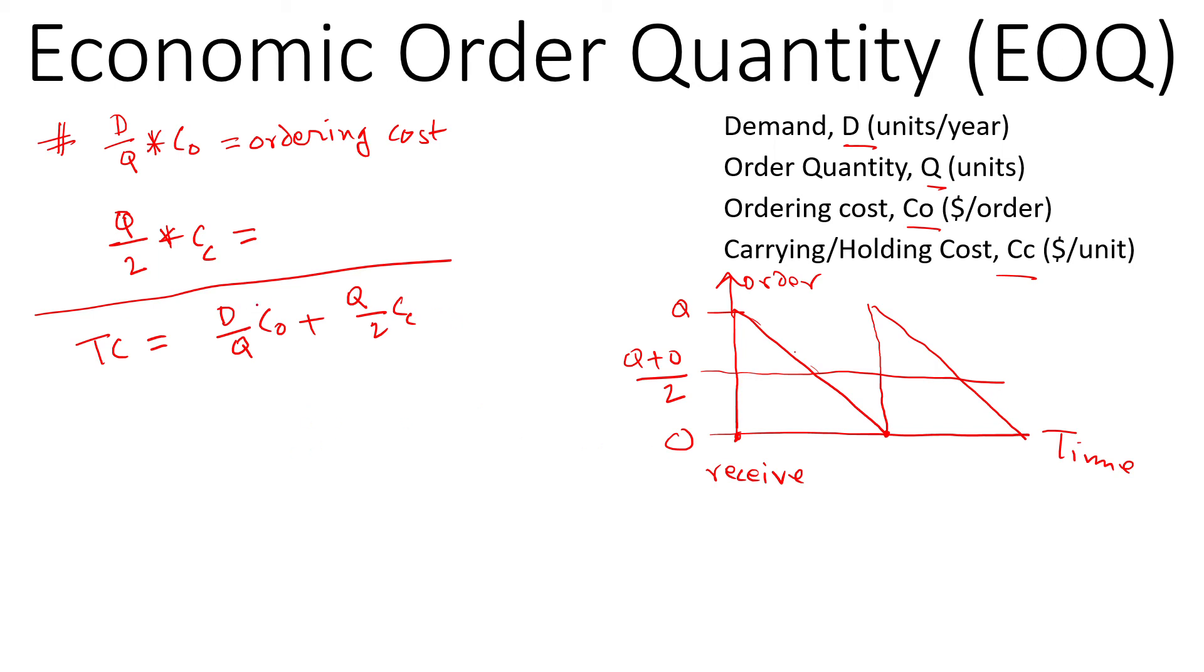So if I use x-axis as the order quantity and the y-axis as the cost in dollars, as you can see, this one looks more like y equals—so Q is x here—somewhat like y equals mx type of situation because we have Q here, so a straight line through the origin.